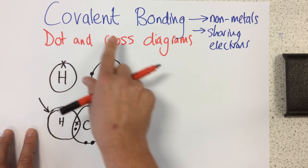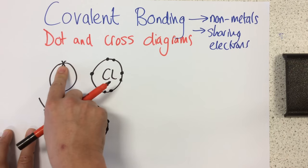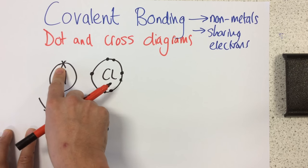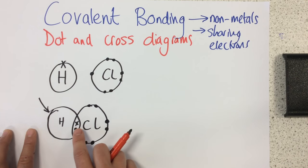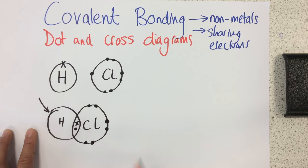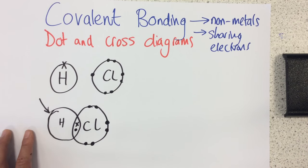Also notice the reason why it's called a dot and cross diagram is we always draw the electrons on one atom with dots, and the other with a cross. This is just to show which atom they originally belonged to. They're actually both still exactly the same. They're both just electrons, so the whole point of dot and cross is just showing which atom it belonged to originally.